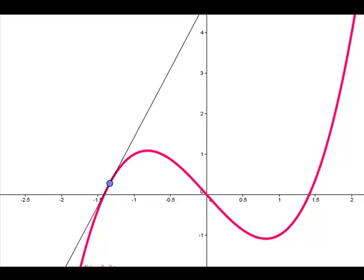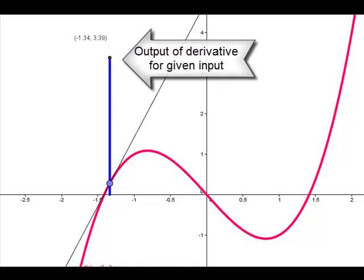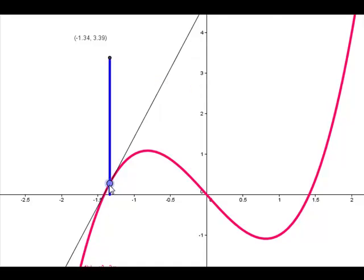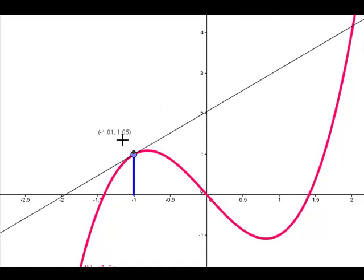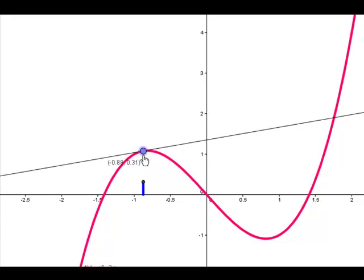So one of the things we did also was look at the slope value. So what happens here is at negative 1.34, the slope of the line is 3.39. We drag the point around and we watch the slope change. So we can see the values here on this point as it gets more shallow.